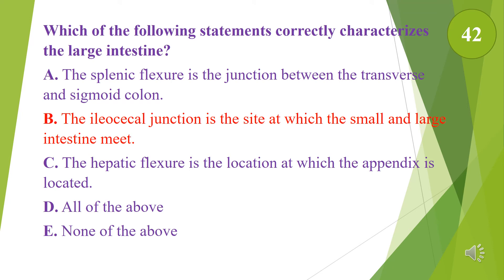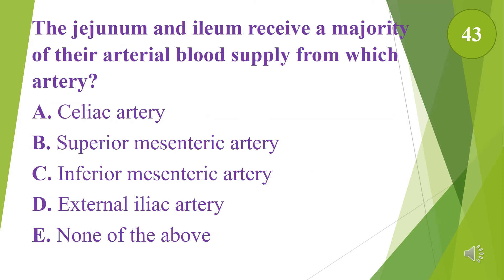The ileocecal junction is the site at which the small and large intestine meet. The jejunum and ileum receive a majority of their arterial blood supply from which artery? A. Celiac artery. B. Superior mesenteric artery. C. Inferior mesenteric artery. D. External iliac artery. E. None of the above. The answer is B, the superior mesenteric artery.